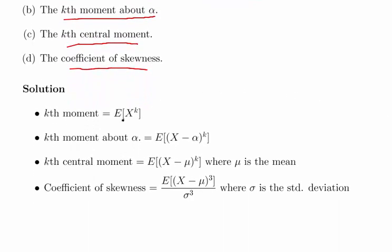The kth moment is the expected value of X to the k, where X is the discrete random variable.